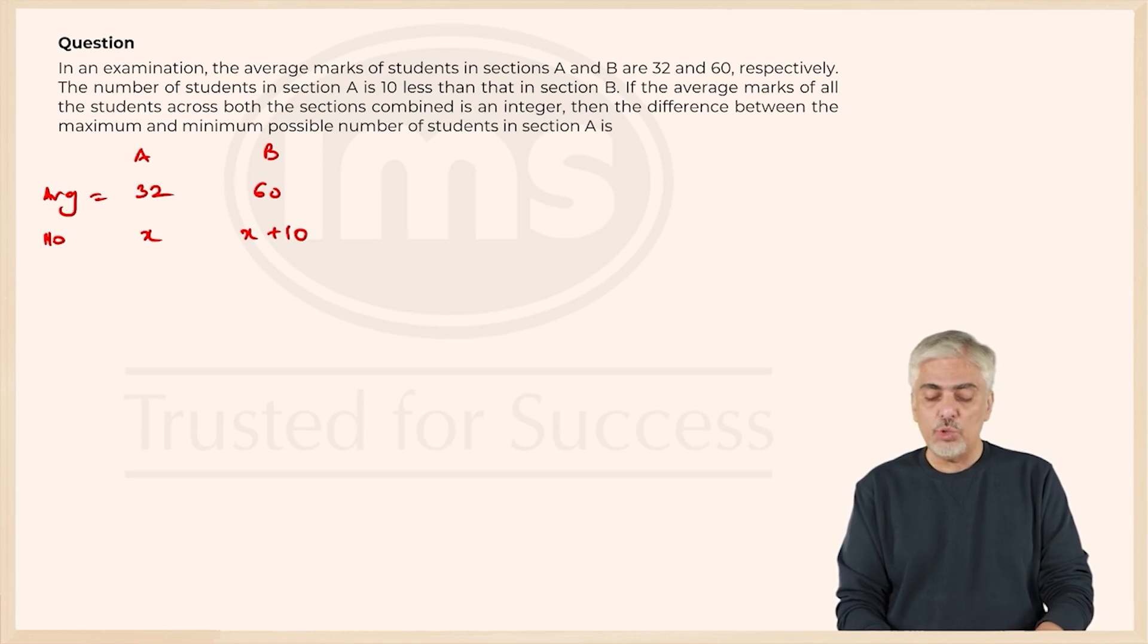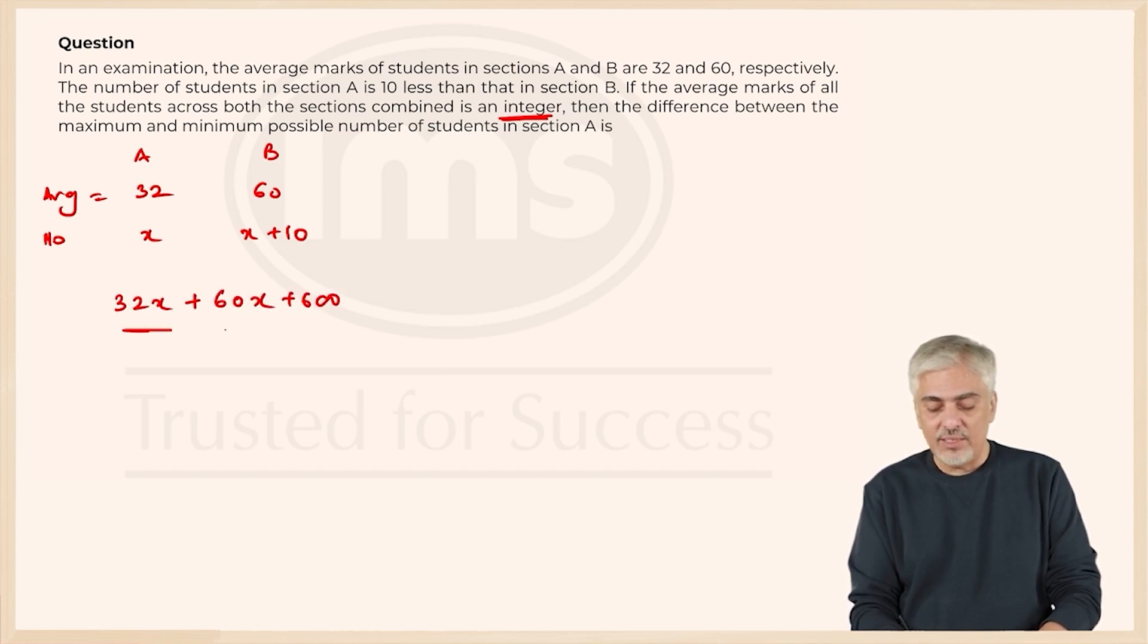If the average marks of all the students combined across both sections is an integer - average together - what will be the average together? Total over here will be 32x. Total over here will be 60x plus 600, and the total number of students will be 2x plus 10.